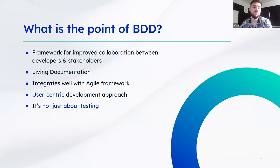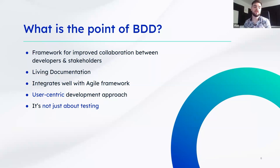BDD integrates very well with the agile framework, especially if you work with Scrum and user stories. If you write acceptance criteria for your user stories in BDD format — actually in Gherkin format, the given/when/then human-readable format — then it's very easy to integrate BDD into your process and convert those acceptance criteria into actual executable tests. They also function as living documentation. To implement BDD properly you need a user-centric development approach, meaning you approach requirements and documentation from the point of view of the user.